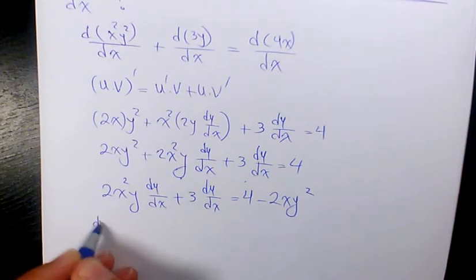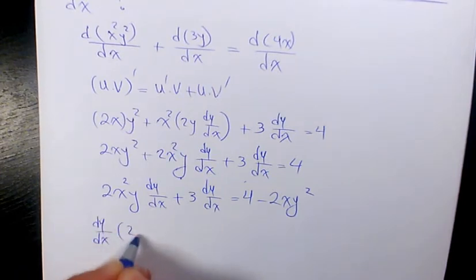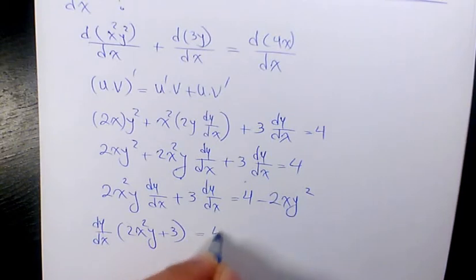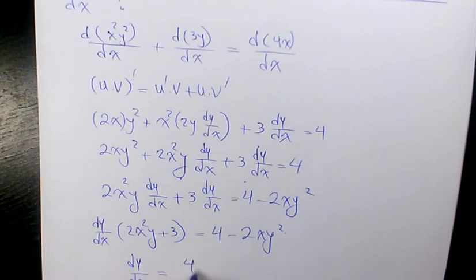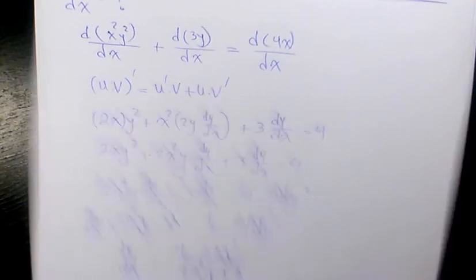Then I can factor dy over dx. 2x²y plus 3 equals 4 minus 2xy². So dy over dx will be 4 minus 2xy² divided by 2x²y plus 3.